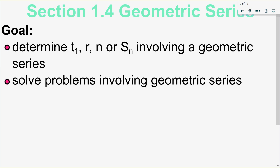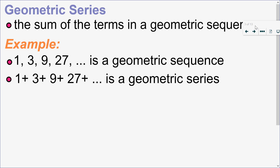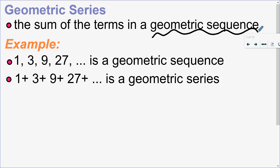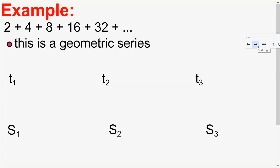In this section we're going to look at geometric series, just like we did with arithmetic series. We've done geometric sequences, so now we do the series. A series is the sum of the terms, so a geometric series is the sum of the terms of a geometric sequence. For example, 1, 3, 9, 27 is a geometric sequence, while 1+3+9+27 is a geometric series.